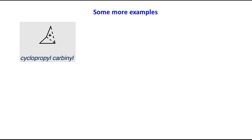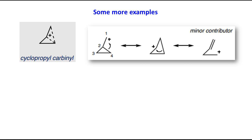The next example of a non-classical carbocation is the cyclopropylcarbinyl cation. The picture shown is the average structure. Looking at the individual resonance structures: in the first, the positive charge is at carbon 1. In the second, a bond forms between C1 and C4 while the C2–C4 bond breaks. A third possibility — a minor contributor — has the C1–C4 bond broken with a newly generated pi bond between C1 and C2, with the positive charge distributed accordingly. Taking the average gives the first average structure shown.